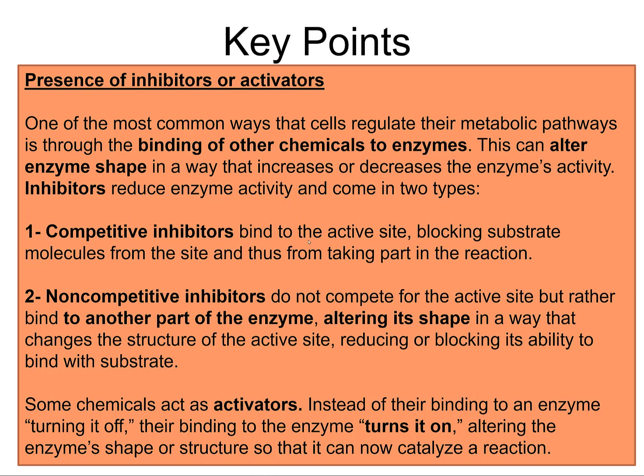Inhibitors can bind to the actual active site or some other aspect of the enzyme. A good example of competitive inhibitors is morphine and endorphins — they compete for the same receptor site. Drug dependency comes from this: if you have a lot of morphine, the endorphin system shuts down because the receptors are being satisfied. Then when you stop the morphine, your body hasn't been making endorphins, and you go through withdrawal.